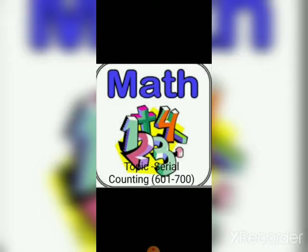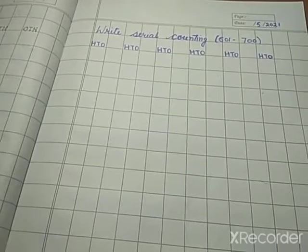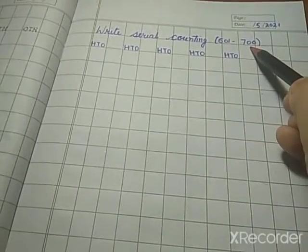Students, today we will learn how to write serial counting from 601 to 700. So let's start. Students, today we will write serial counting from 601 to 700.